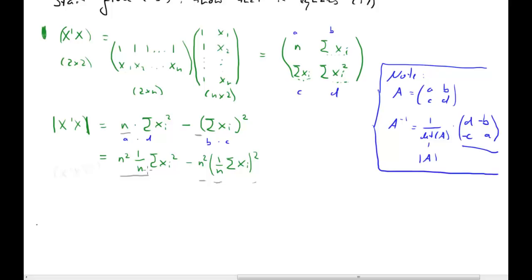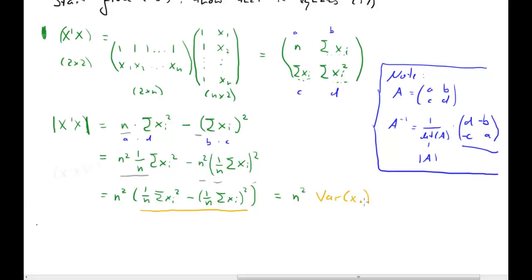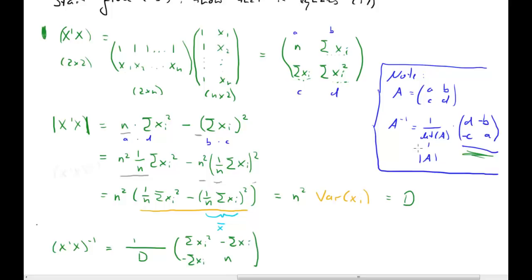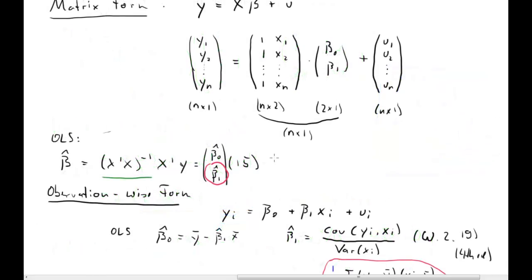Factoring out n-squared, we can recognize familiar terms. This expression is just the variance of x — the key insight is that this piece is simply x-bar, giving us a variance formula. For the inverse, we interchange the diagonals and multiply off-diagonals by negative 1, then bring in the factor 1/d, so each term is multiplied by 1 over the determinant d.